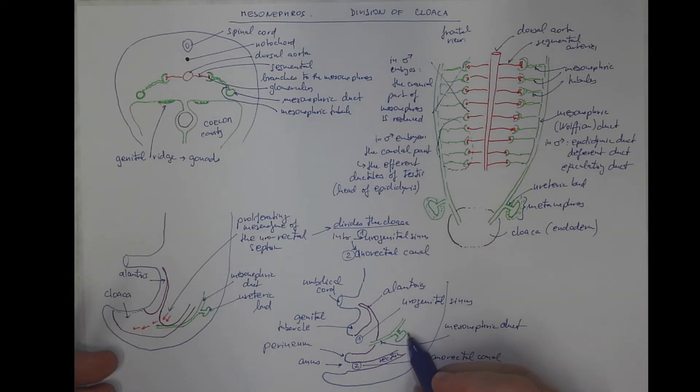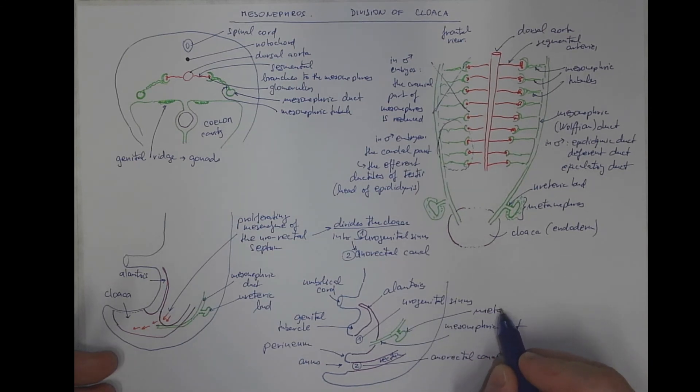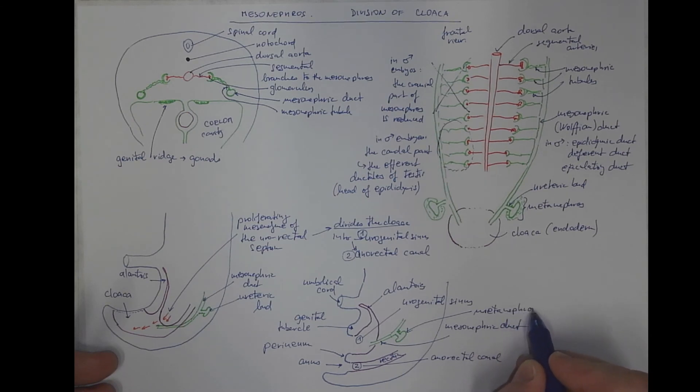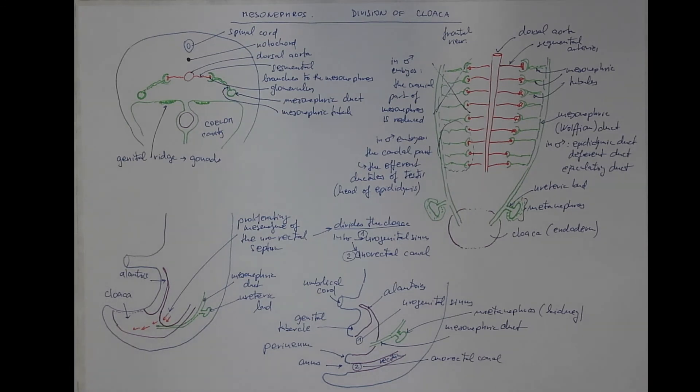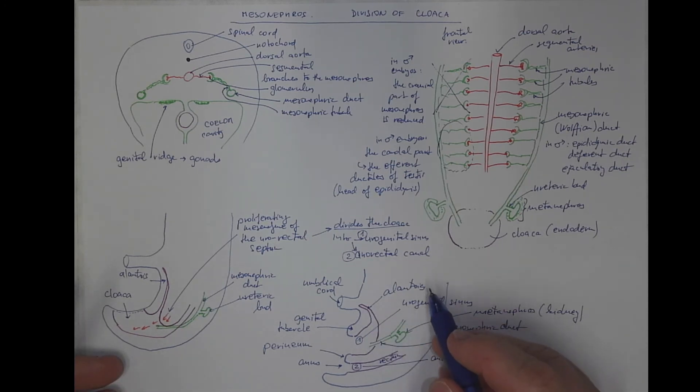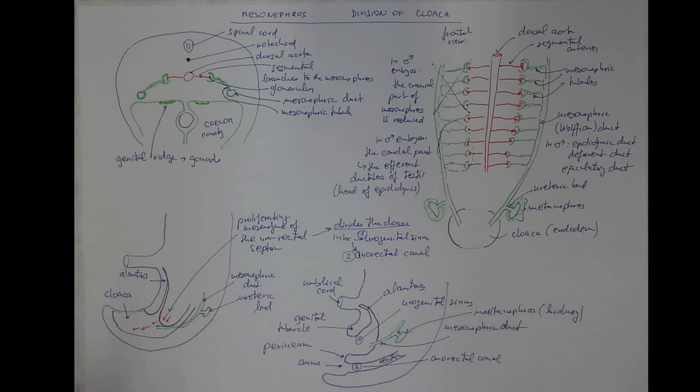This will be the metanephros, the kidney. The allantois actually becomes part of the urinary bladder and the urachus, but we will explain that on a separate scheme.